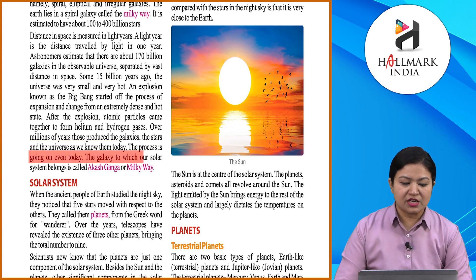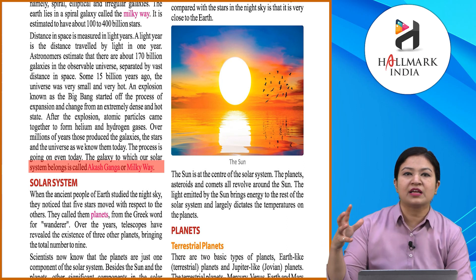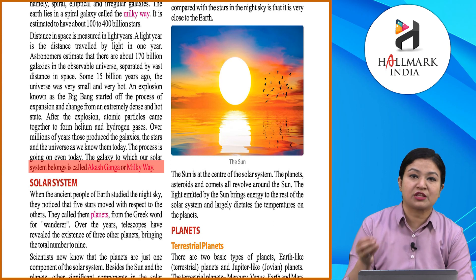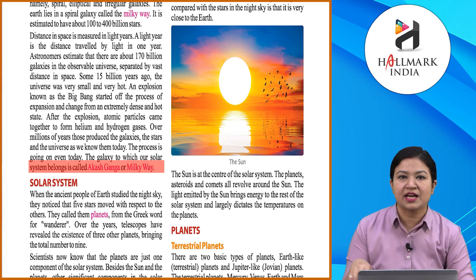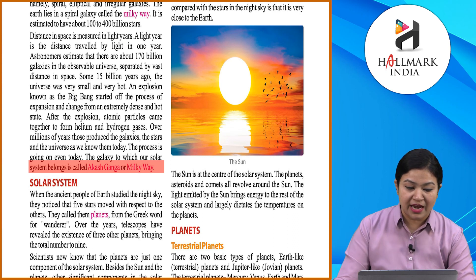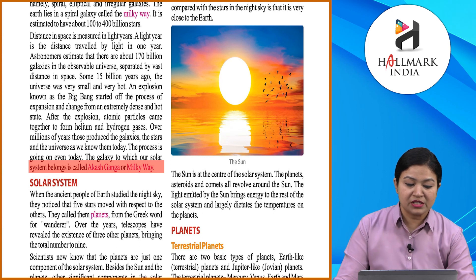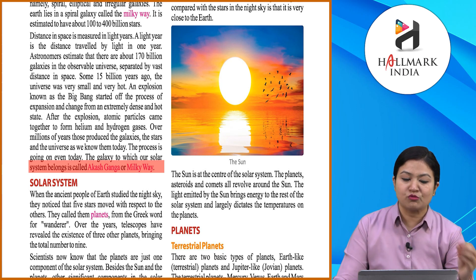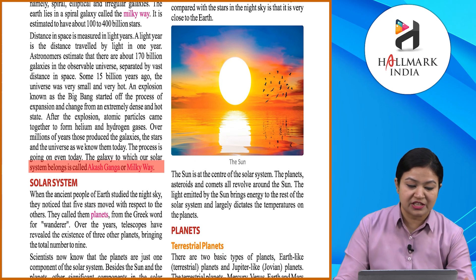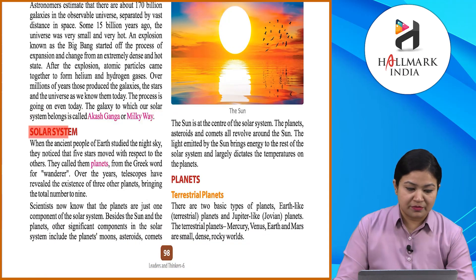The galaxy to which our solar system belongs is called Akash Ganga or Milky Way. All the heavenly bodies found in space belong to a galaxy. Galaxies are of three types: spiral, elliptical, and irregular. Our Earth is a planet that belongs to the Milky Way galaxy. The distance between galaxies is measured in light years.